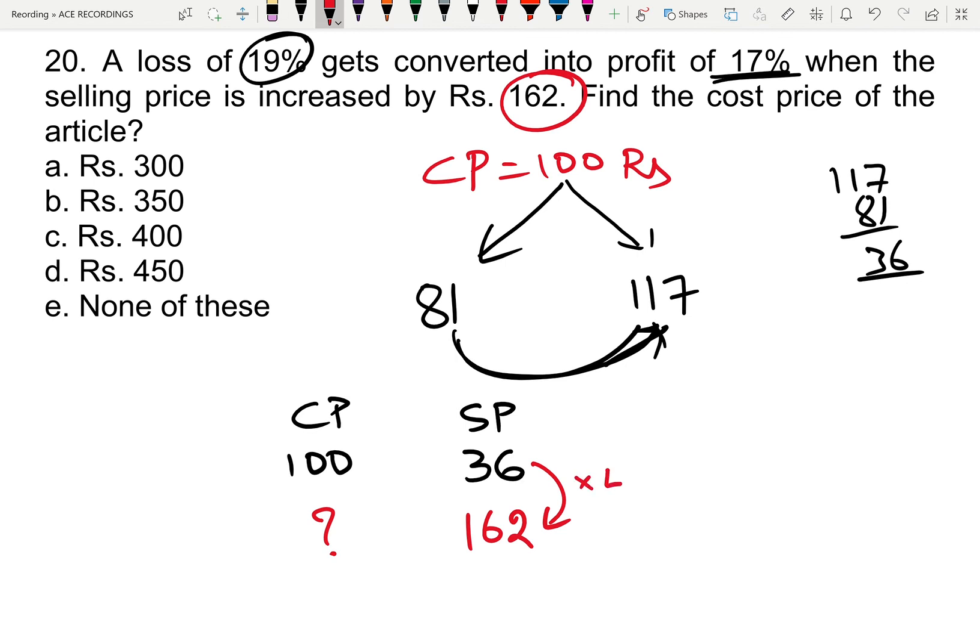So we need to multiply by 4.5 times. 36 into 4 is 144, and 0.5 times 36 is 18, giving us 162. So the cost price is 4.5 times 100, which is nothing but 450 rupees.